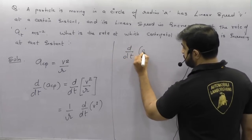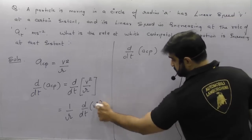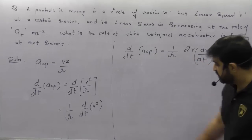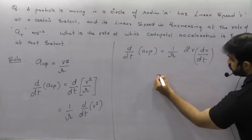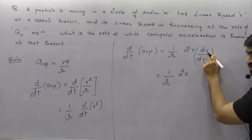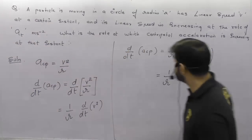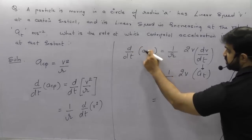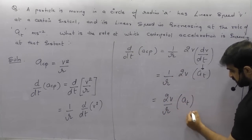d/dt of a_cp = (1/R) · 2V · dV/dt. Derivative of V² becomes 2V · dV/dt. We know (1/R) · 2V · (dV/dt) — dV/dt is the rate of change of magnitude of velocity, which is nothing but tangential acceleration A_T given in the question. So the rate of change of centripetal acceleration = 2V·A_T / R.